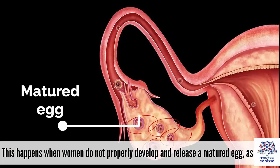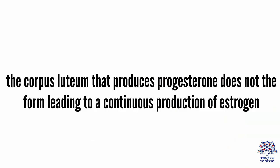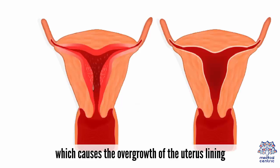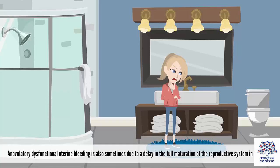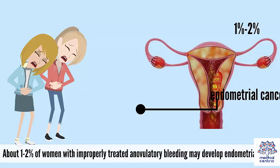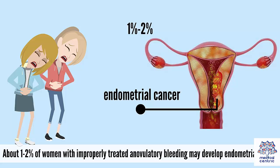This happens when women do not properly develop and release a matured egg. As a result, the corpus luteum that produces progesterone does not form, leading to a continuous production of estrogen, which causes the overgrowth of the uterine lining. Anovulatory dysfunctional uterine bleeding is also sometimes due to a delay in the full maturation of the reproductive system in teenagers. About 1-2% of women with improperly treated anovulatory bleeding may develop endometrial cancer.